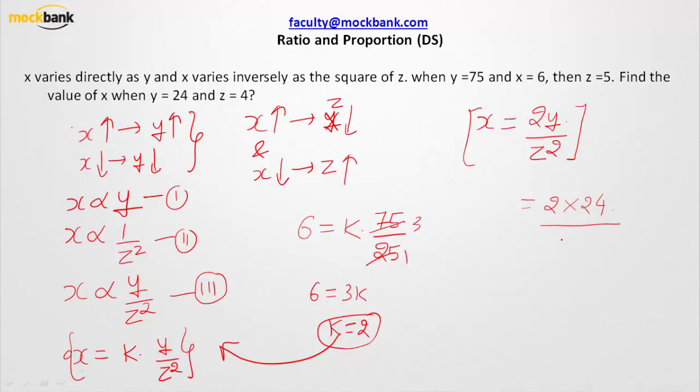The question wants you to find out what is the value of x when y is 24 and z is 4. So z square becomes 16. 2 gets cancelled from numerator and denominator. The value of x comes out as 3.